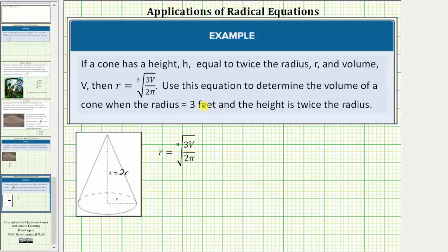For the next step, we substitute three for r into our equation and then solve the equation for v. So performing this substitution, we would have the equation three equals the cube root of three v divided by two pi.